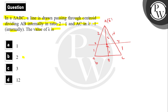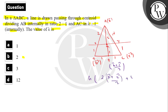Let position vector of B be vector B and position vector of C be vector C. So for median AD, D is the midpoint of BC, so D = (vector B + vector C) / 2. Similarly, for G — the centroid divides median AD in ratio 2:1 — so G = 2·(vector B + vector C)/2 + 0 all divided by 3, which gives G = (vector B + vector C) / 3.